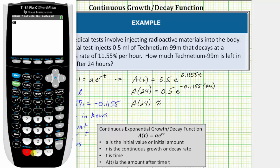We enter 0.5. To enter the base e, which equals 2nd ln or 2nd natural log, which brings up e raised to the power. Now we enter the exponent of negative 0.1155 times 24 for A(24), and then press enter.